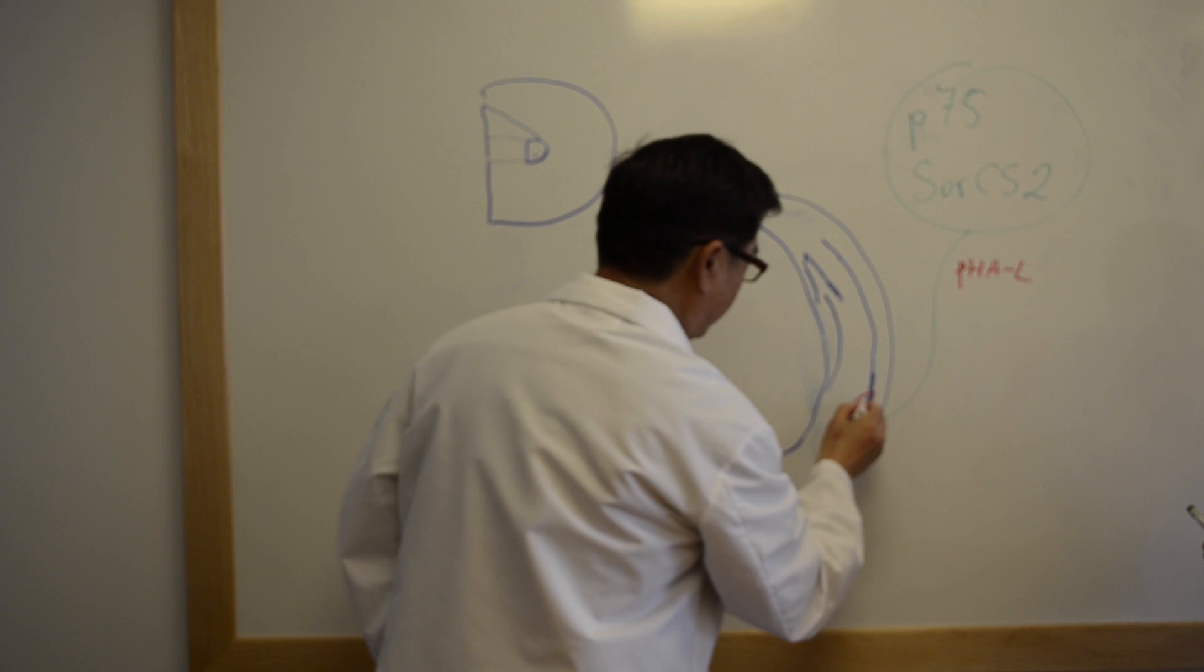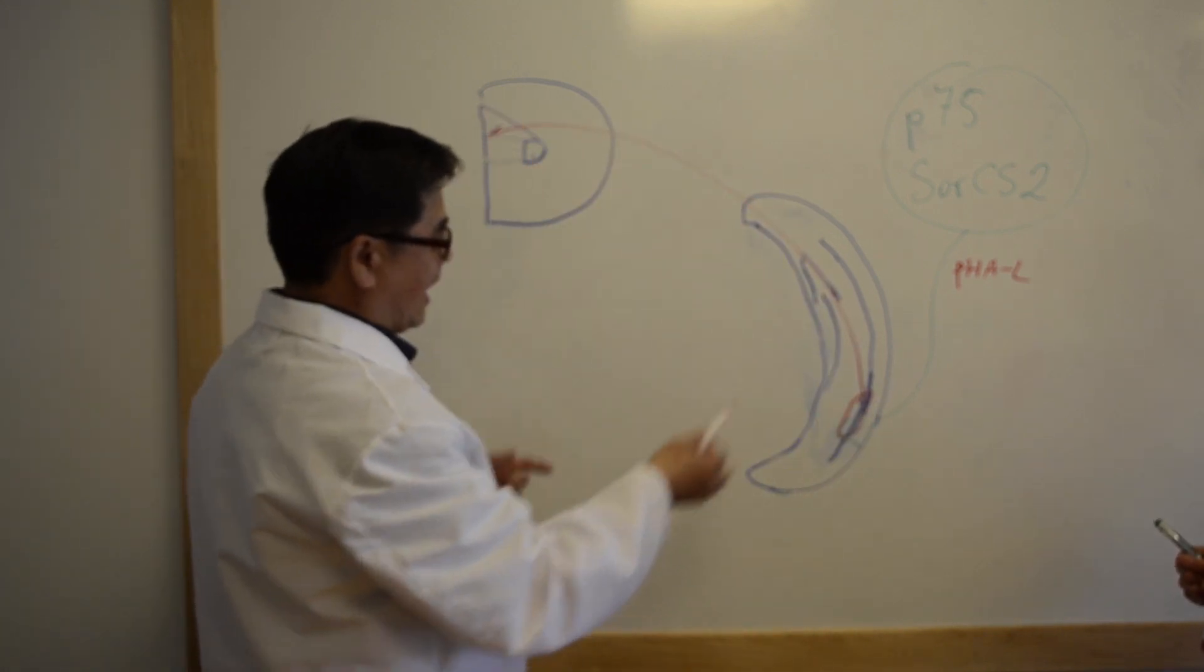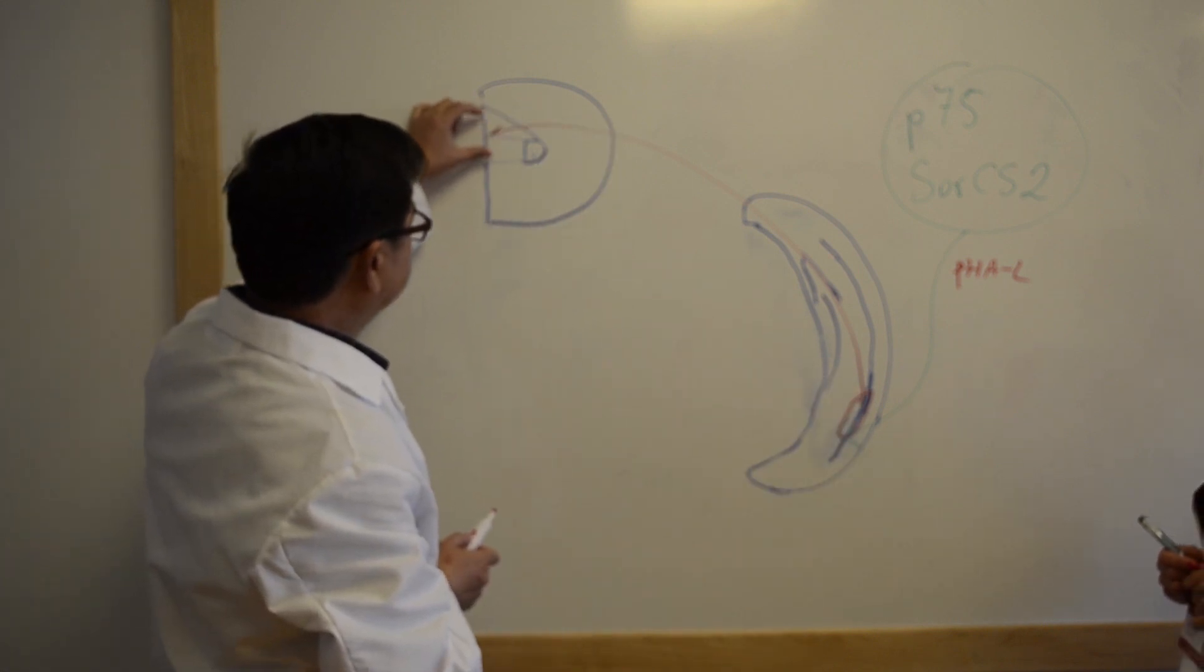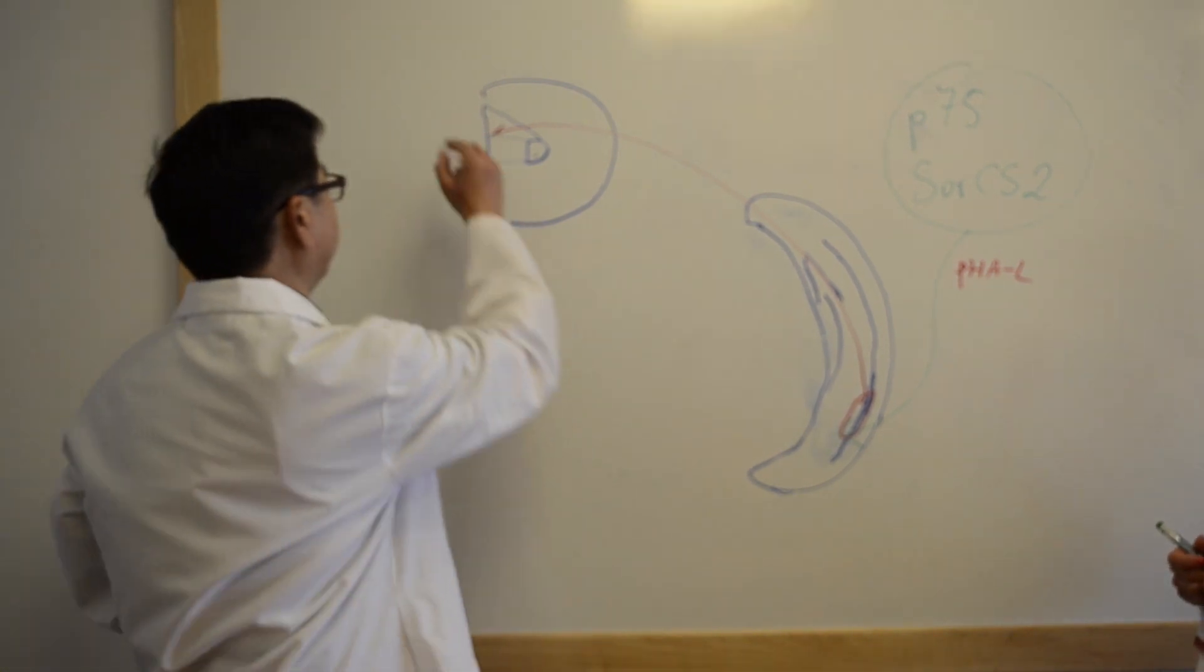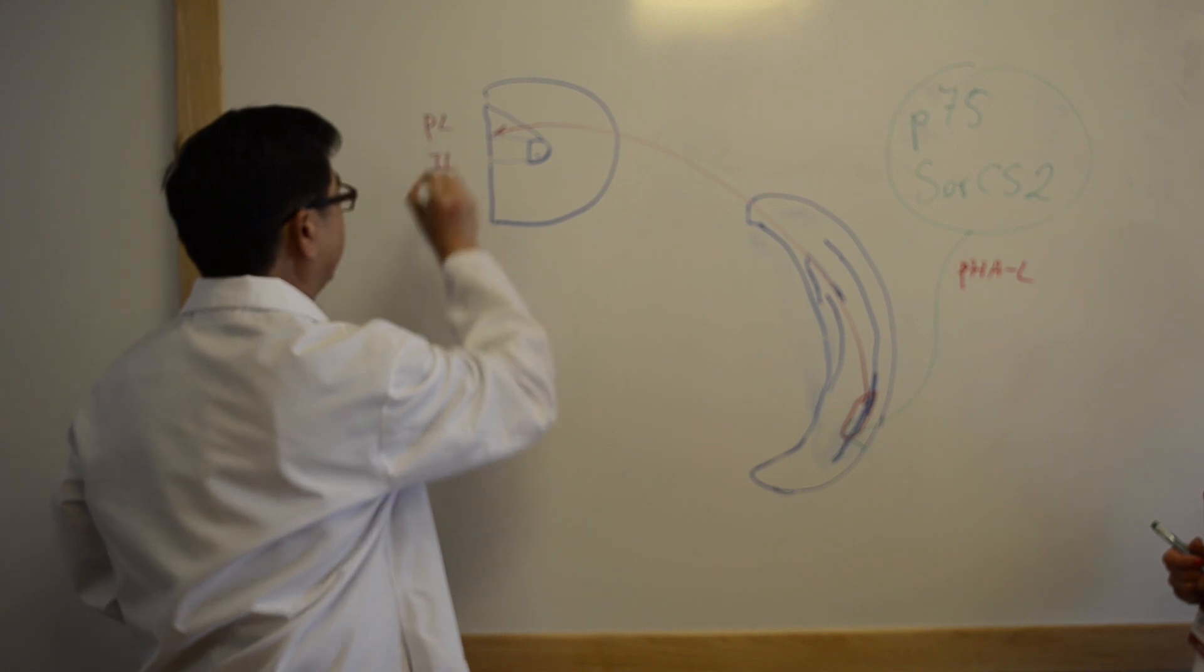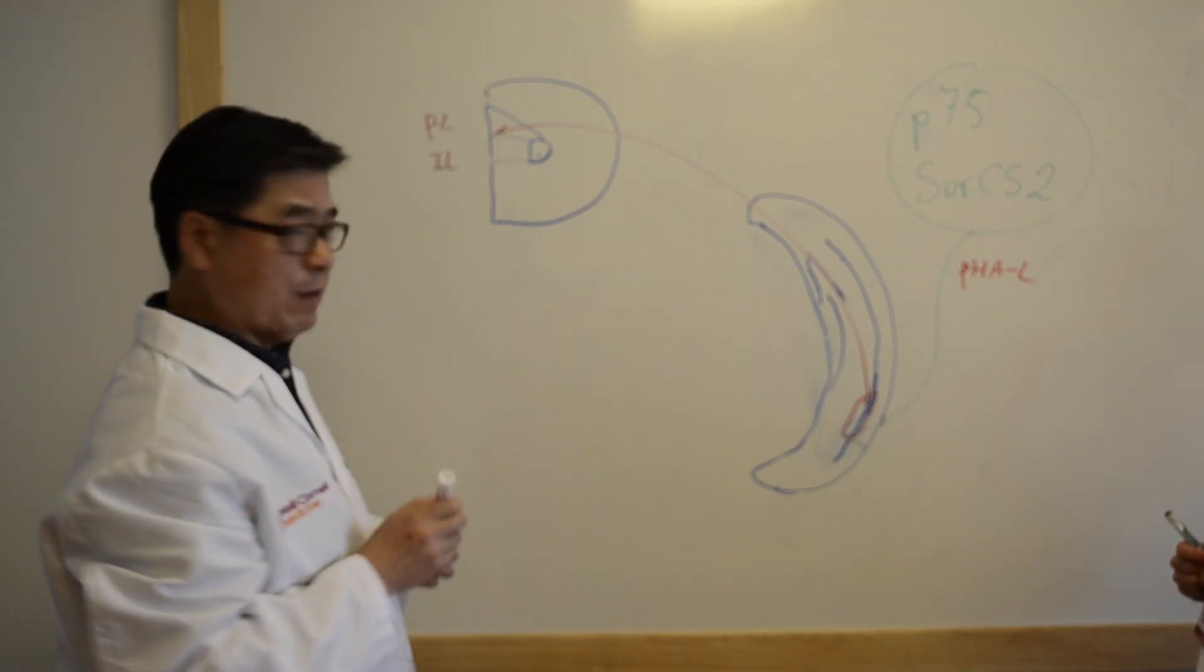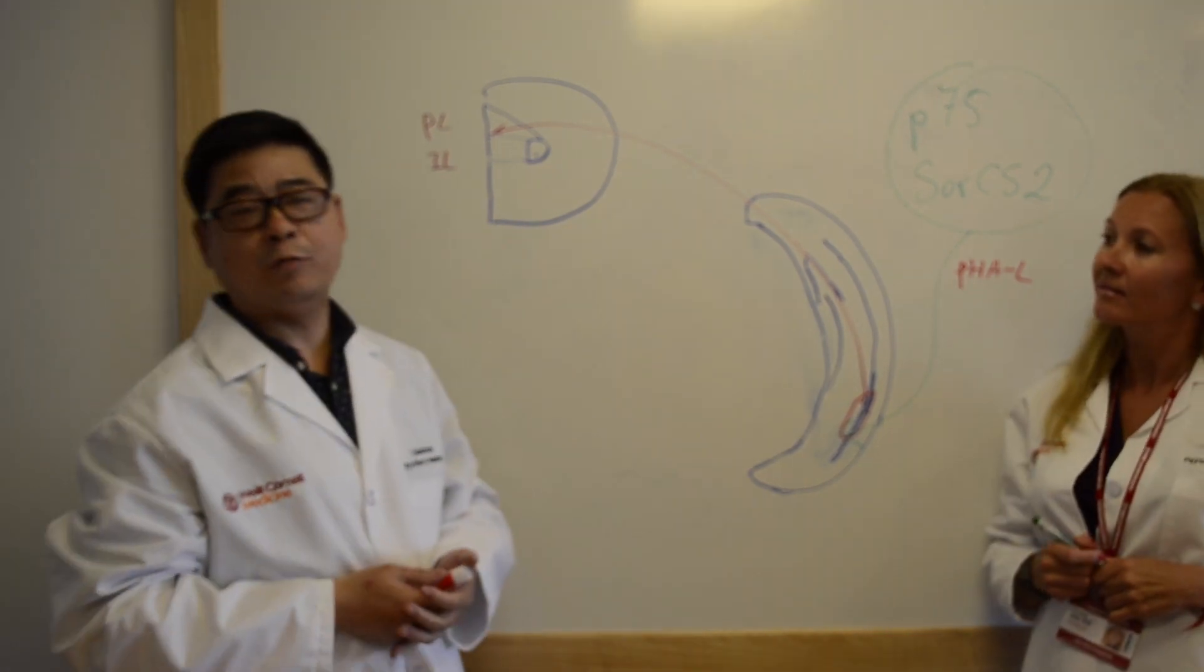We inject this protein together with the anterograde tracer PHAL into the ventral CA1 where it spreads to P75 and SORCS2. Those neurons project to the prefrontal cortex. After injection, we evaluate the fiber densities in this area. We found that only PL but not IL showed a decrease in fiber density after BDNF-prodomain injection.